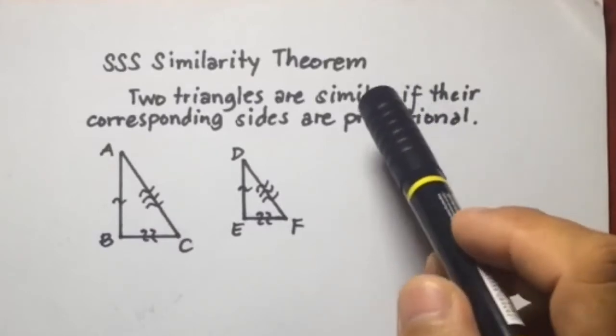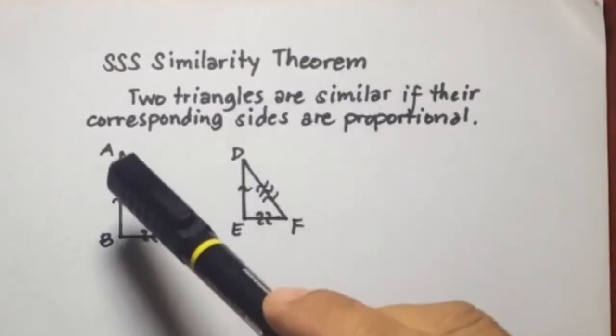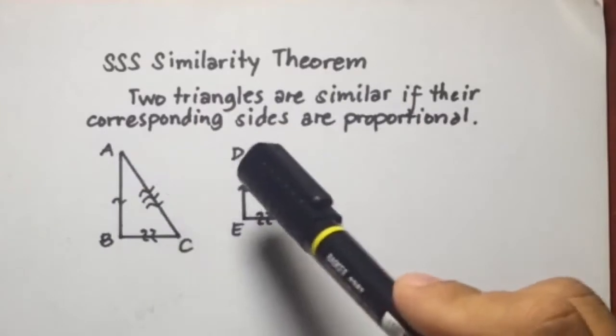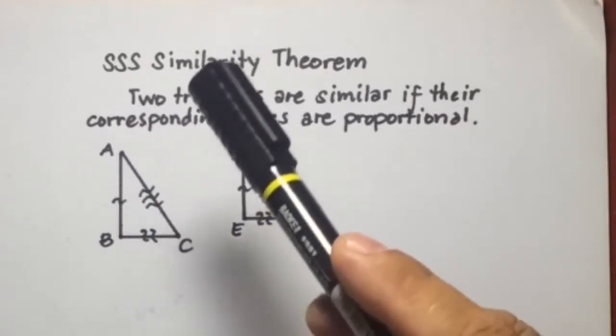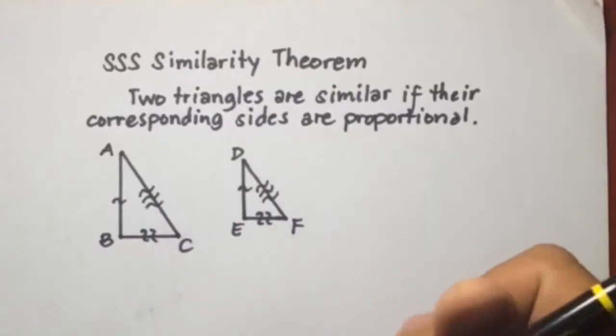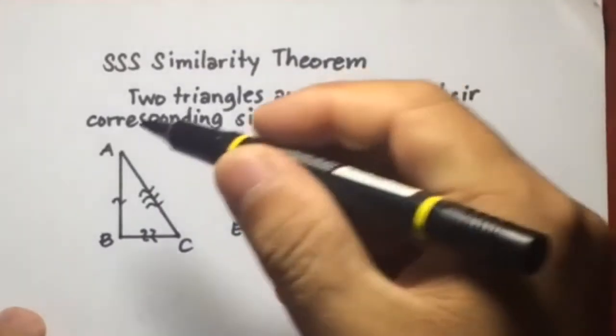The meaning of proportional is that if you're going to have the ratio of the corresponding sides, all of the three corresponding sides should be equal. So in this figure, based on the markings, we can say that AB corresponds to DE.